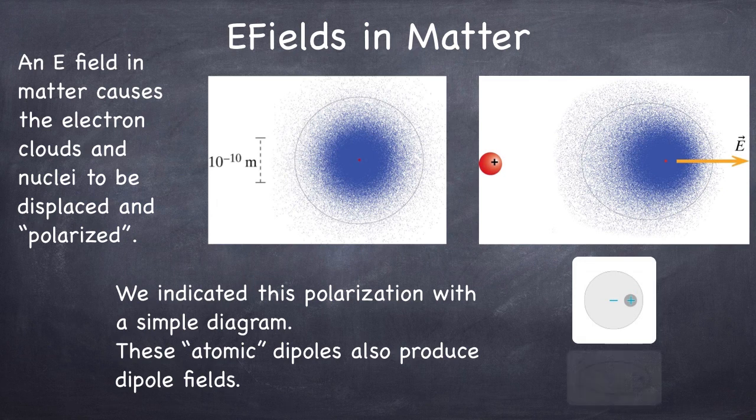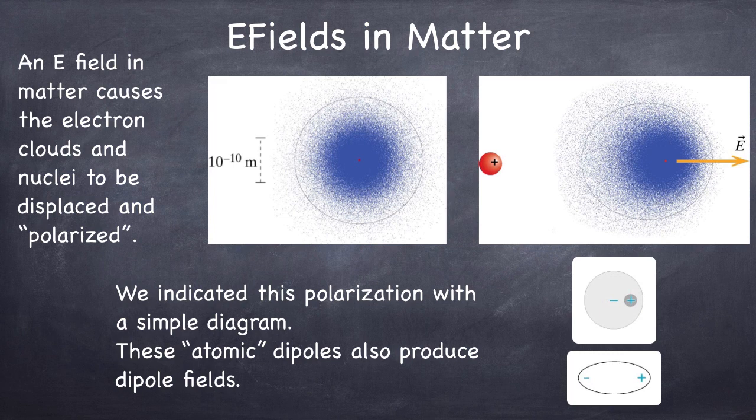And we're going to use a simple, easy-to-draw diagram to indicate polarization, but you should realize that it really boils down to a distortion of the charge distribution in matter.